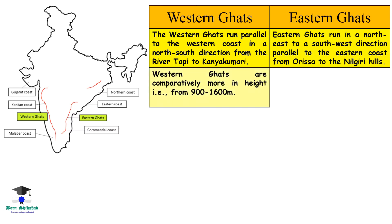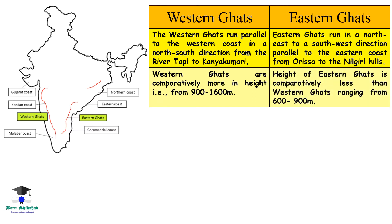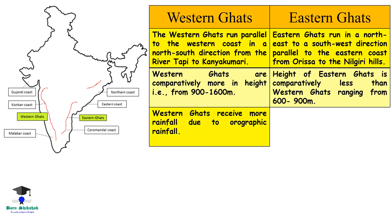The Western Ghats are comparatively more in height, ranging from 900 to 1600 meters, while the height of the Eastern Ghats is comparatively less, ranging from 600 to 900 meters.